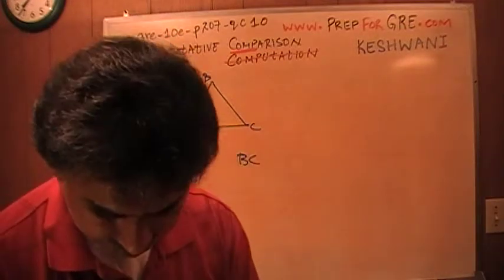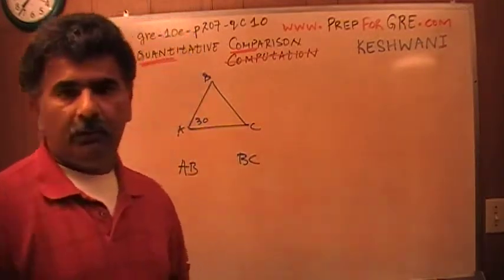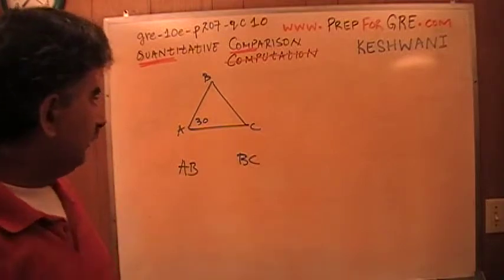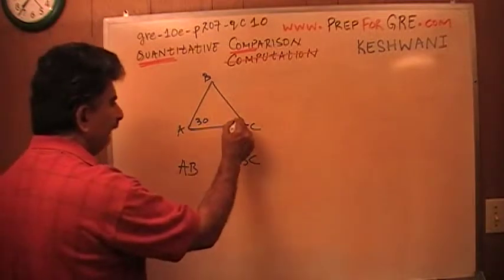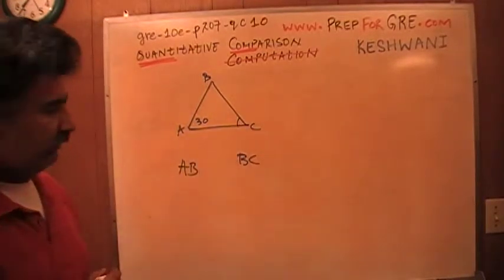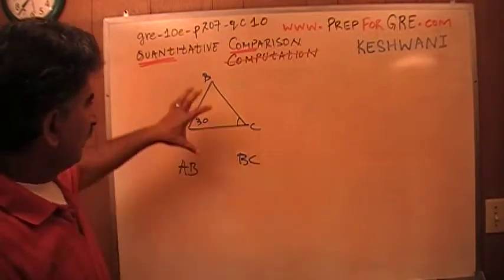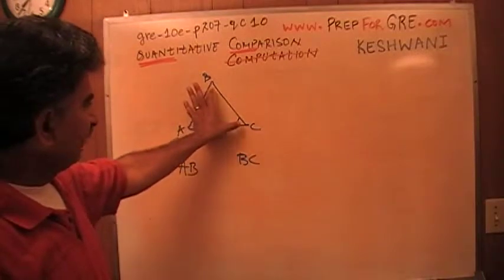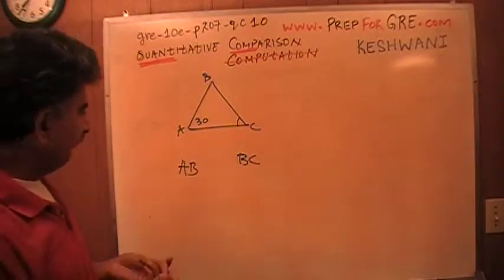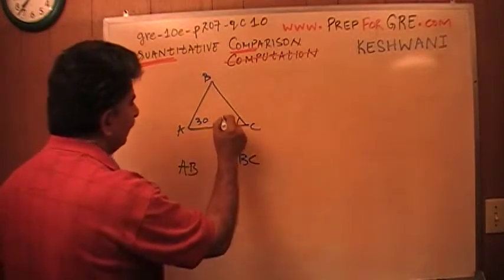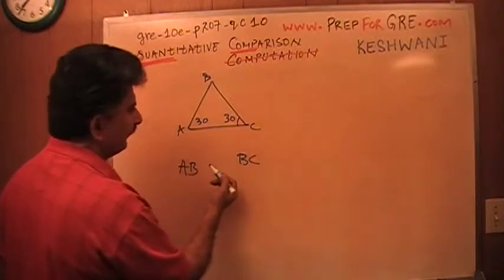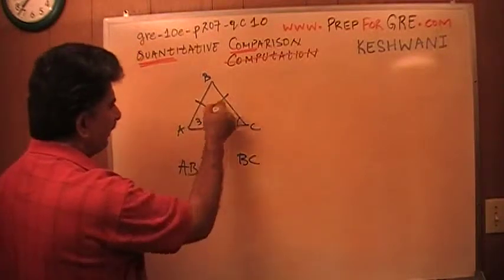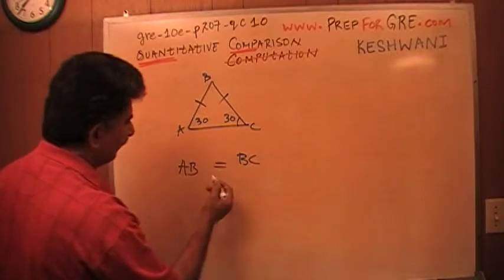What can we do here? Well, what we need to do here is to realize the fact that this angle is missing. We do not know how much this angle is. We need to know how much angle C is before I can compare this side AB which faces angle C versus this side BC which faces 30. If this thing is 30, if that's the case, then AB equals BC and the answer will be C.